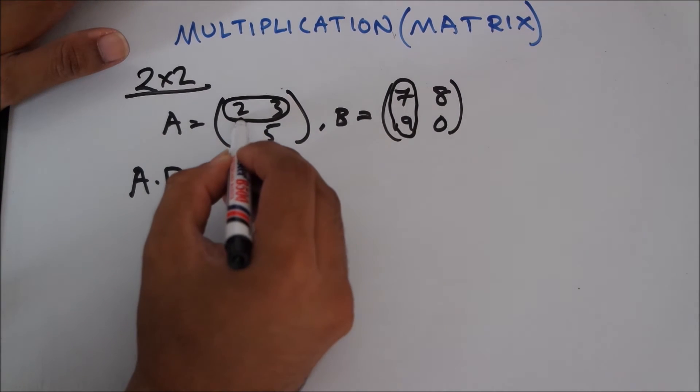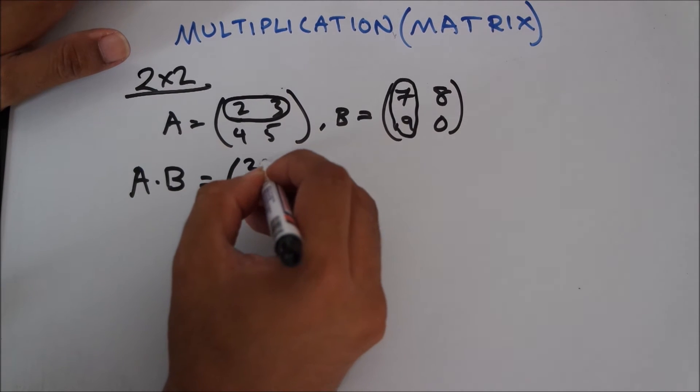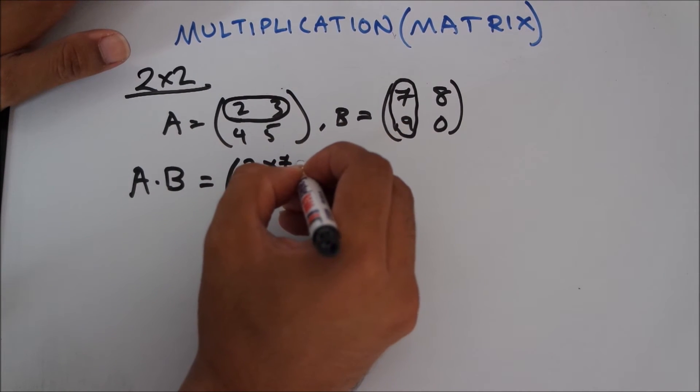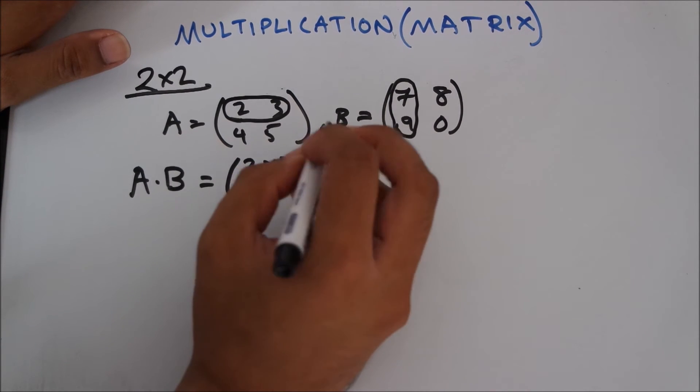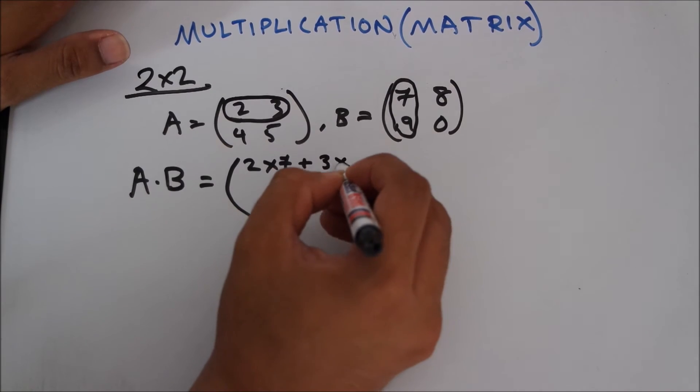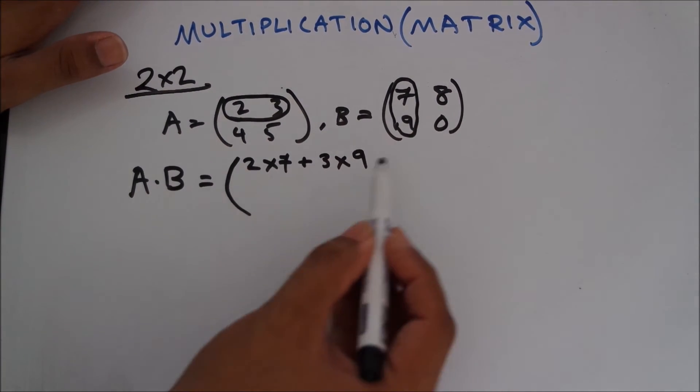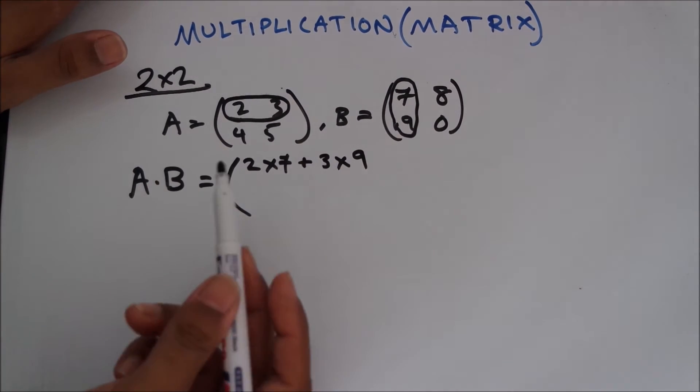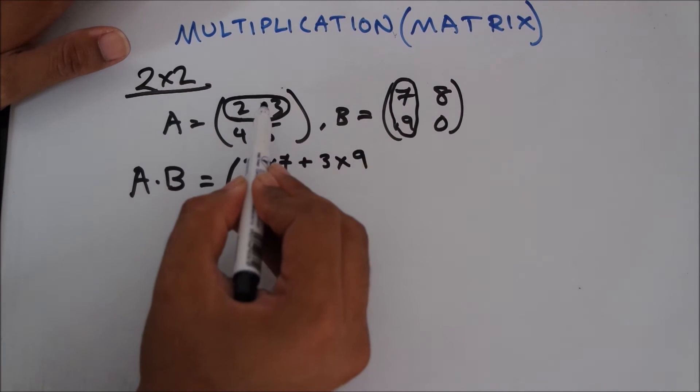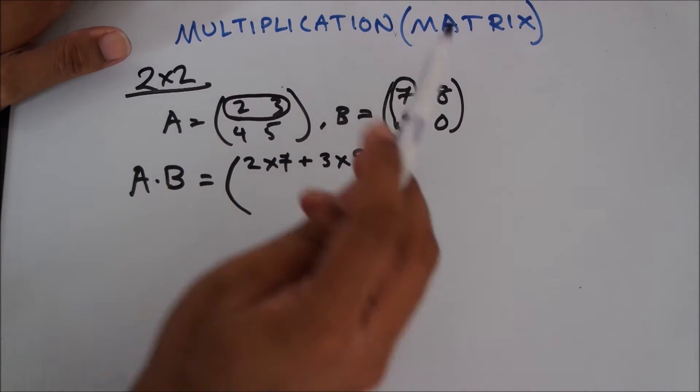You take 2 and multiply it with 7, so 2 into 7. Then you have to add this, plus 3 into 9. Now you move on. We are doing the first row. Since this is a 2 by 2 matrix, the answer will be a 2 by 2 matrix as well.